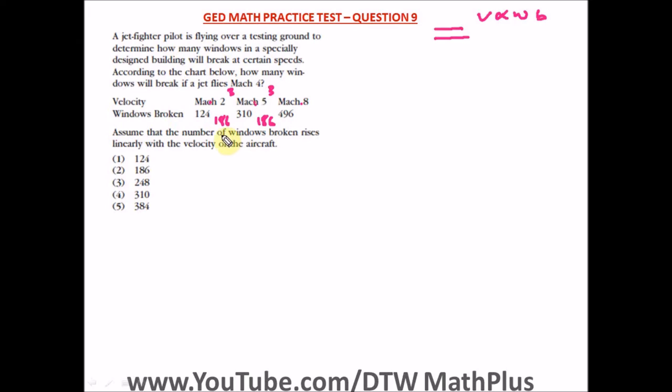But the question here says how many windows will break if a jet flies Mach 4? So we know that for velocity and windows broken, we're going to do proportion here. For velocity at 3 Mach, since we have the difference between each of the Mach is 3, we have how many windows broken at 3 Mach? We have 186. So for 4 Mach, how many windows are we going to have broken? It should be x.